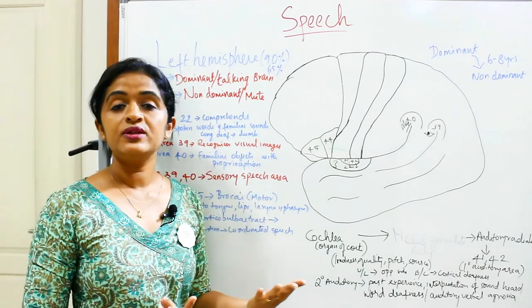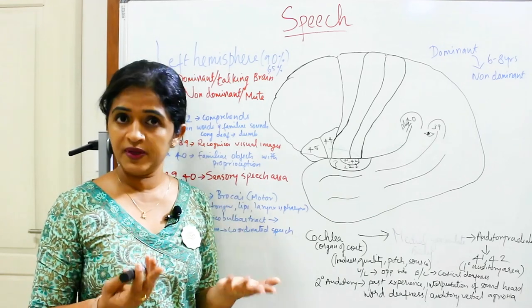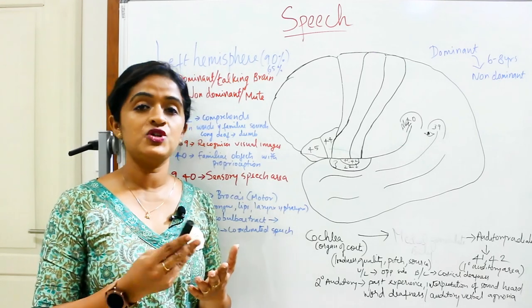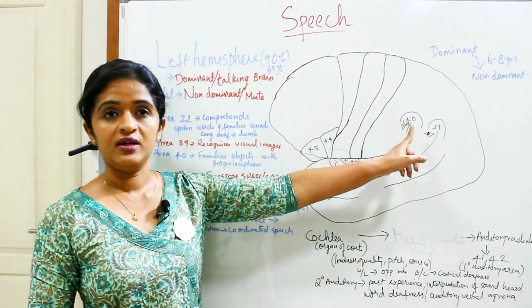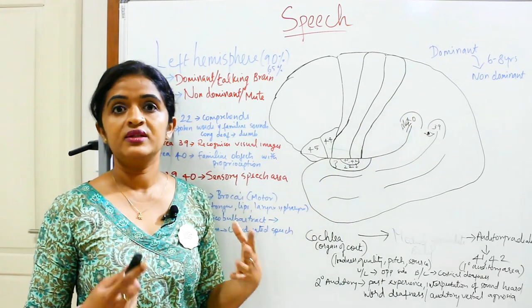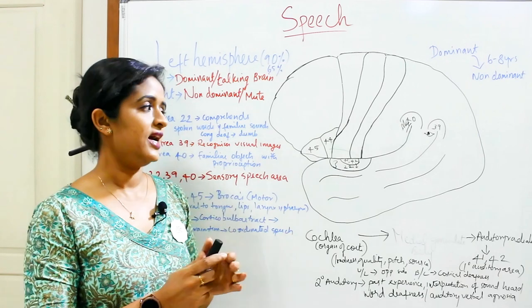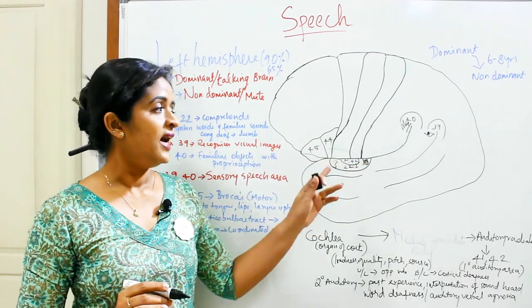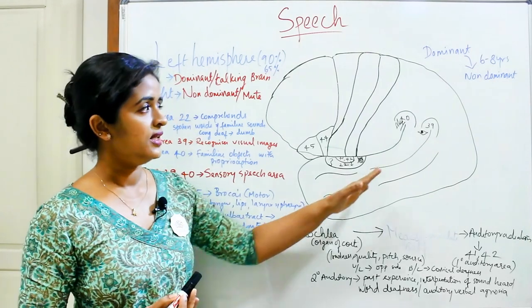Area number 40, the supramarginal gyrus, is responsible for familiarizing objects with the help of proprioception. For example, if I close my eyes and feel for this object, I know it is a pen and I can speak it out. That method by which you recognize familiar objects by touch with eyes closed is done with the help of area 40. All these areas — 22, 39, and 40 — which interpret language through heard sounds, visual images, and touch, are assimilated in the posterior part of area 22, known as Wernicke's area.